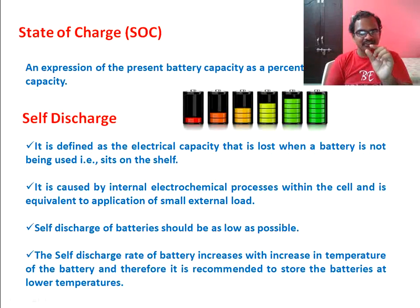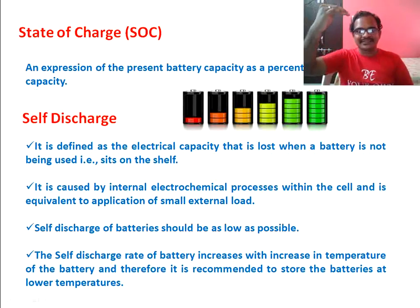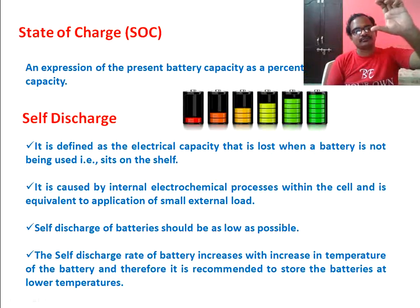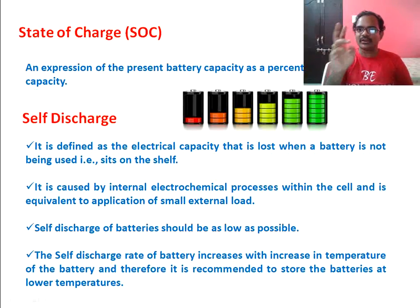Looking at your mobile phone, if the battery percentage shows 57%, the battery capacity is currently at 57% — that 57% is the state of charge. It may be 10%, 20%, 30%, up to 100%. If the battery is fully charged, the state of charge is 100%. If the battery indicator shows 50%, the state of charge is 50%; if it shows 20%, the state of charge is 20%.